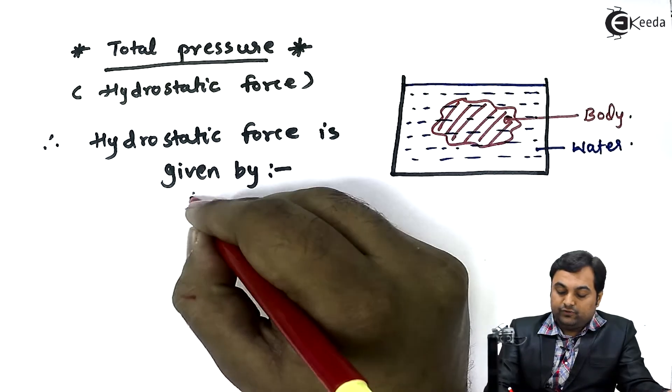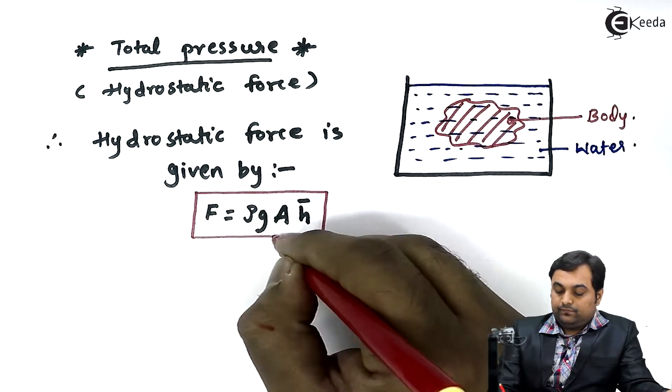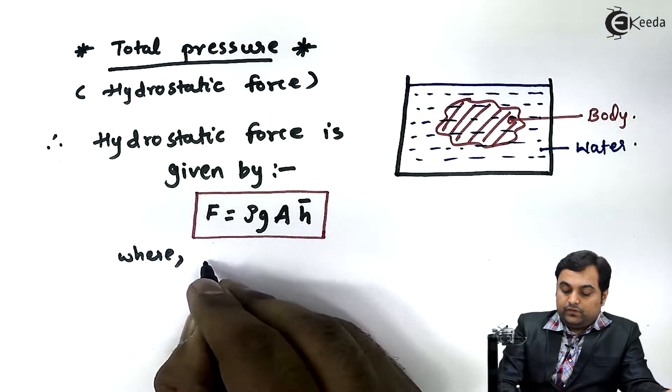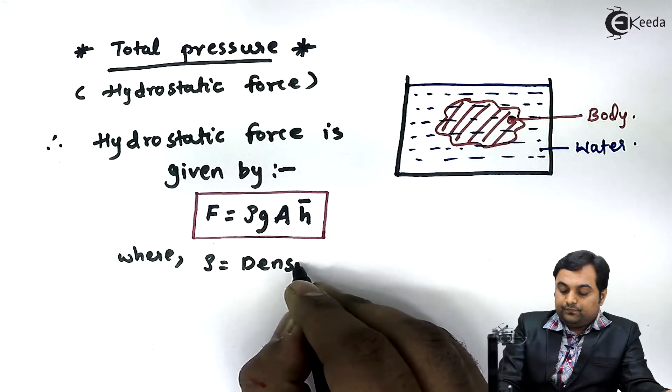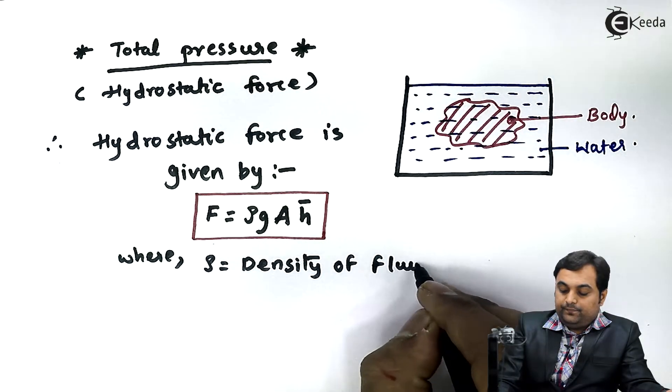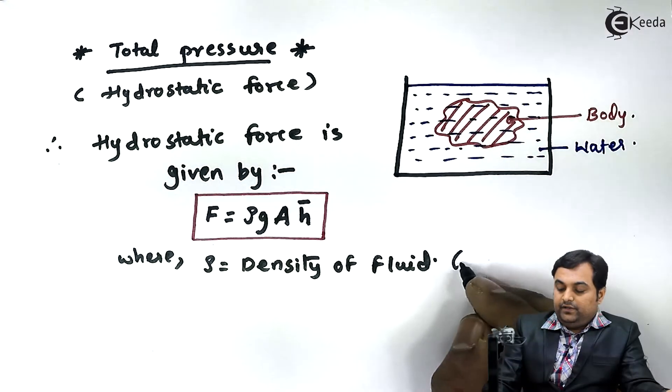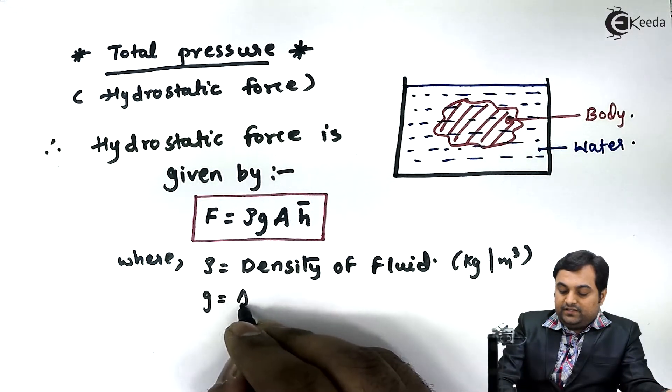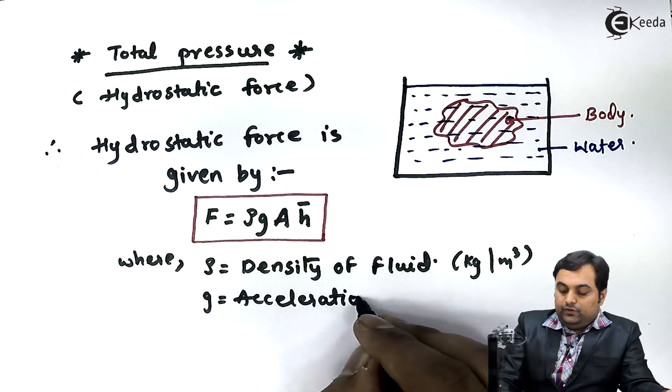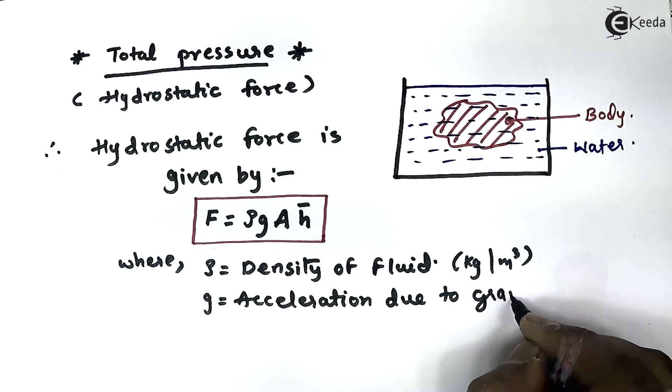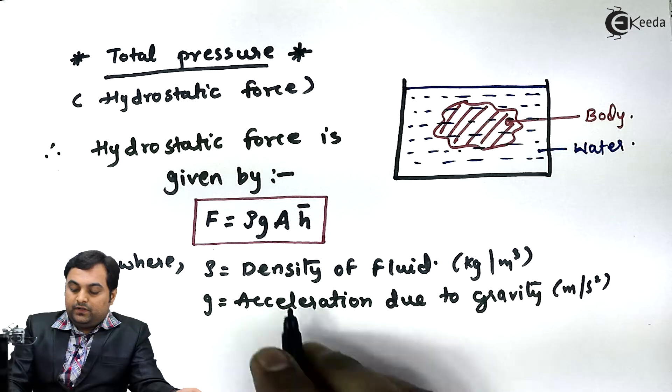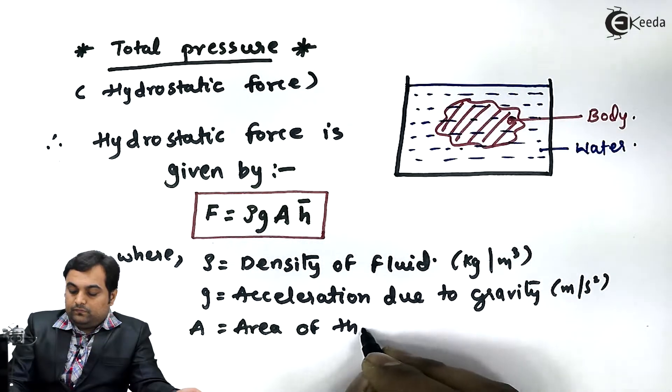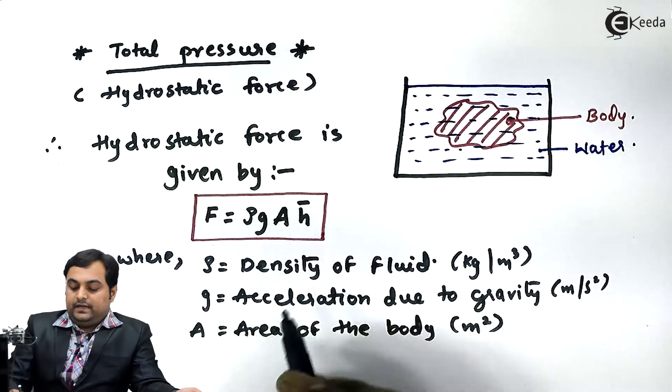Now here I'll write down where rho is the density of fluid in terms of kg per meter cube, G is acceleration due to gravity in meter per second square, capital A is the area of the body in meter square.